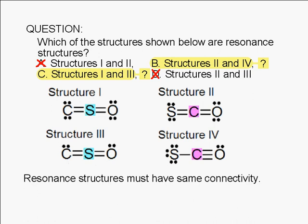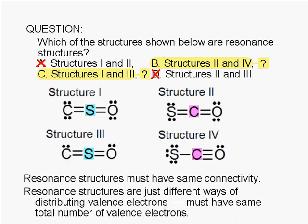How do we decide between B and C? For two structures to be considered resonant structures, they must have the same total number of valence electrons. Resonant structures differ only in the way the electrons are distributed.